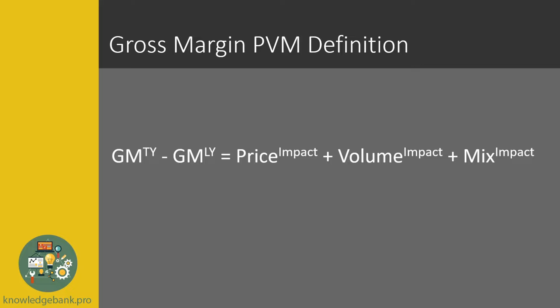Unfortunately for gross margin we have to deal with three variables. We have the unit price, we have the volume, and we also have to consider the unit cost, because it's the difference between price and cost that factors into our margin. All three of those variables will differ between our margin this year and margin last year.